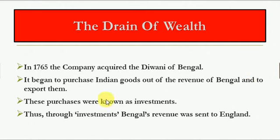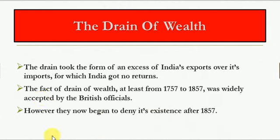In 1765, the company acquired the Diwani of Bengal. It began to purchase Indian goods out of the revenue of Bengal and export them. These purchases are known as investments. Thus, through investments, Bengal's revenue was sent to England.